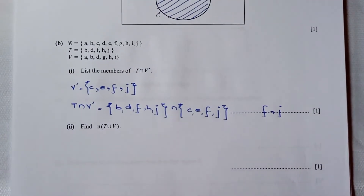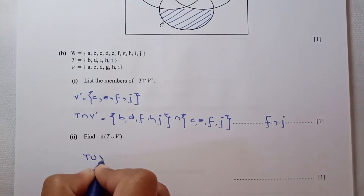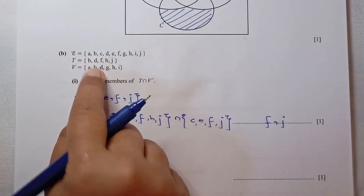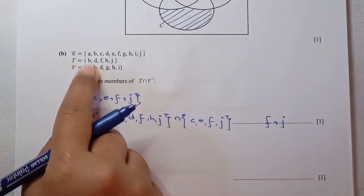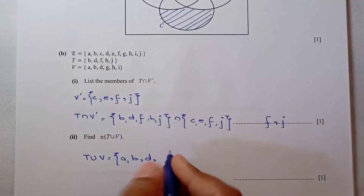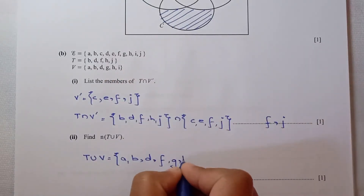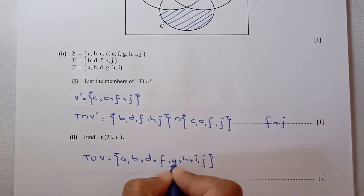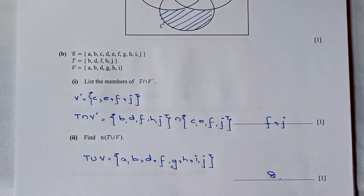For the second part, find the number of elements in T union V. T union V contains all distinct elements from both sets: A, B, D, E, F, G, H, I, and J — counting gives 8 elements in T union V.